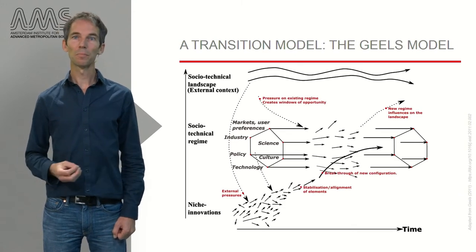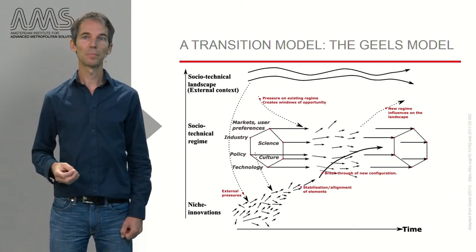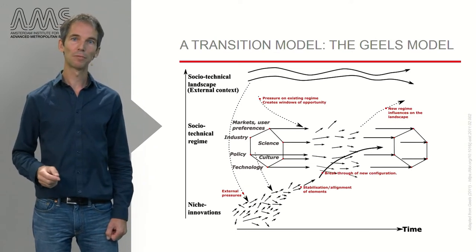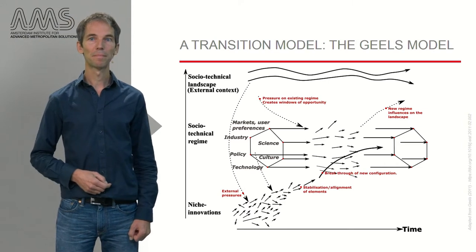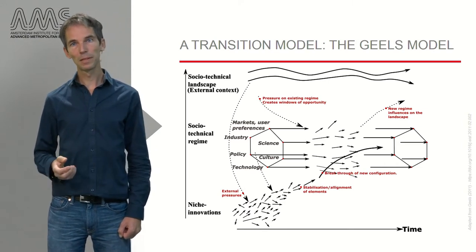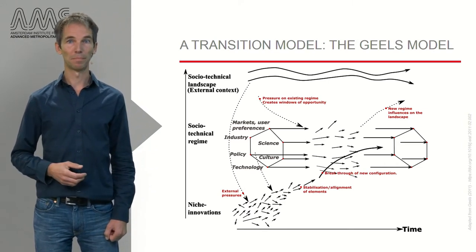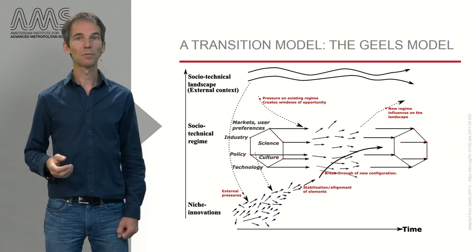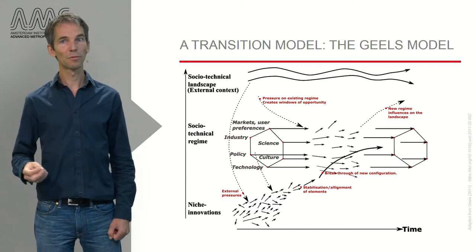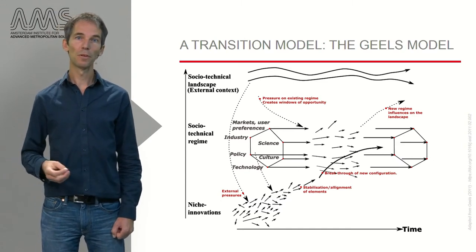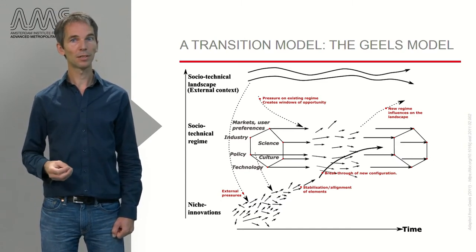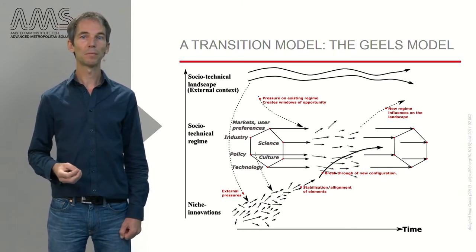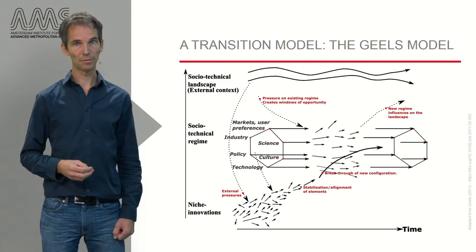Lastly, it is worth mentioning that niche level change may be seen as a bottom-up process, but sometimes changes come directly from the regime level or even landscape level. Natural disasters may speed up innovations on the niche level. Moreover, current regime actors may aspire to a transition and help to get niche innovations off the ground. After all, many urban living labs are initiated by consortia of regime stakeholders. These developments are the dotted arrows on the left side of the figure.